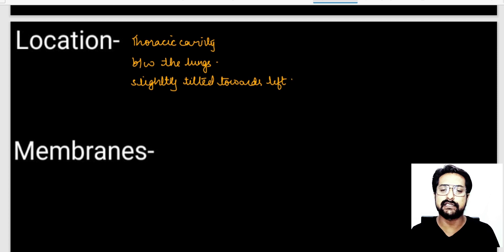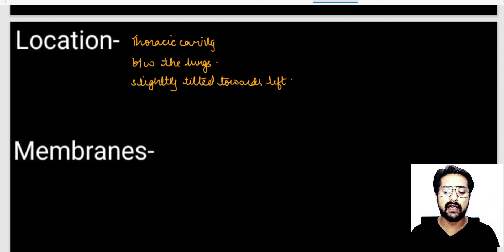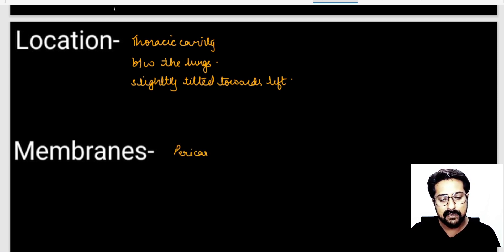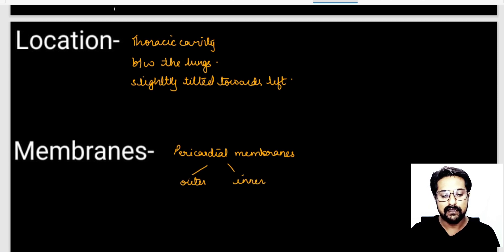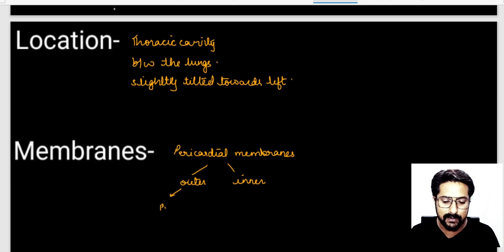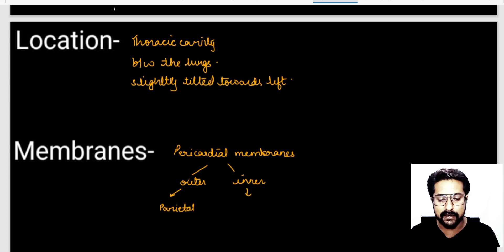The human heart is slightly tilted towards the left side. The membranes that surround the human heart are known as pericardial membranes. There are two pericardial membranes: one is on the outer side and the other is on the inner side. The outer pericardial membrane is known as the parietal membrane, while the inner pericardial membrane is known as the visceral membrane.